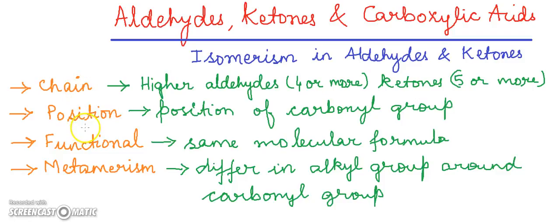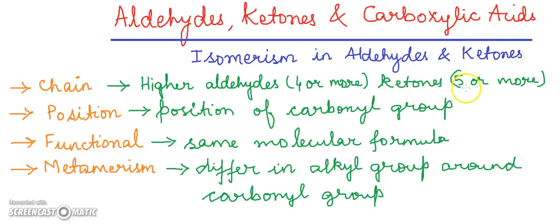In the isomerism of aldehydes and ketones, we have four types of isomerism: chain isomerism, position isomerism, functional isomerism, and metamerism. In chain isomerism, higher aldehydes where the number of carbon atoms is 4 or more, or ketones having 5 or more carbon atoms, show chain isomerism.